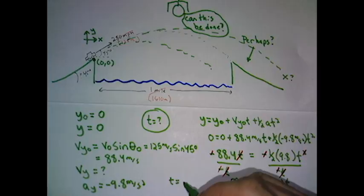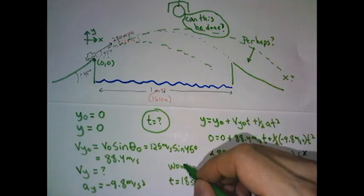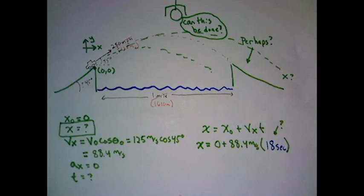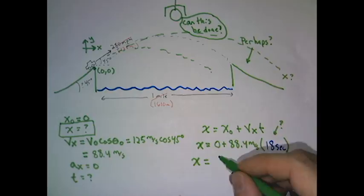Talk about a lot of time to spend flying through the air in a car. I'm not sure how good I feel about his chances here. But I'm going to take that time of 18 seconds, and I'm going to bring it back over to my x direction. Because whatever time he's traveling vertically is also the same time he's traveling horizontally. And now we can figure out, at least in an idealized air resistance-less case, how far he should go.